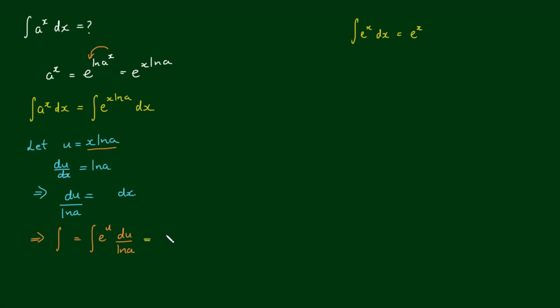So the log of a, or 1 on the log of a, is simply a constant that can come out the front, and that's multiplied by the integral of e to the u with respect to u.